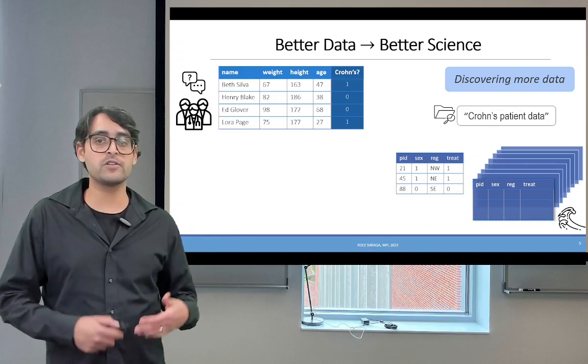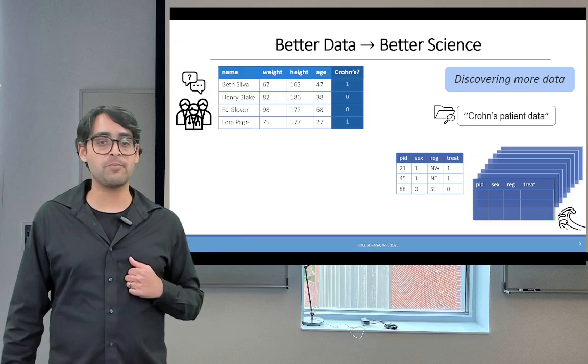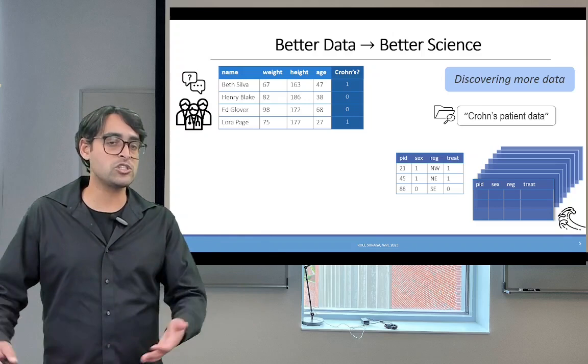Specifically here, in that example, we use a keyword search, specifically Crohn's patient data, to try to search this repository of tables and come up with this piece of information that can be useful for these scientists.